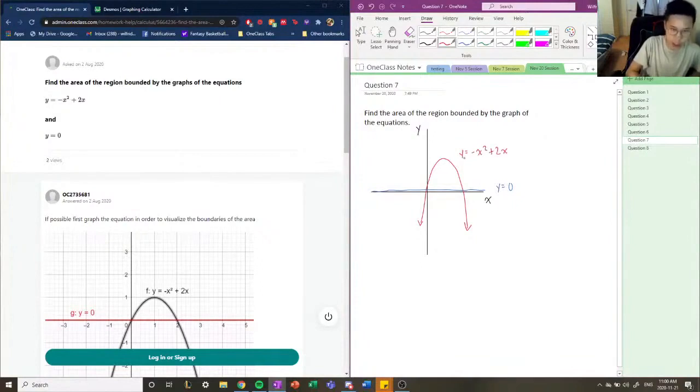And this equals to y equals negative x squared plus 2x. We know it's pointing downwards because the a coefficient is negative. And the zeros, I just looked at the graph here, but you can find the zeros by factoring this. So this is zero and this is two. And that's the vertex. So they're asking us to find the area of the region enclosed by these two graphs, which is this.